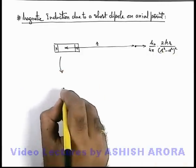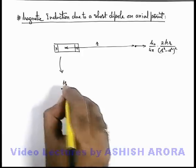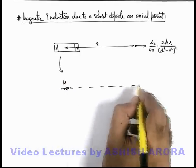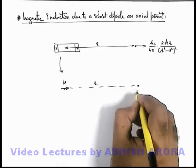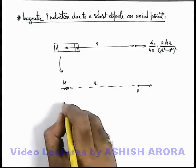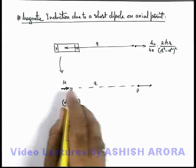Now if the dipole is very short, we can represent it by a small arrow with magnetic moment M. From the dipole at a distance r at point P, the magnetic induction is given by the same relation, but in the denominator we can neglect d, as d will be very very less than r if the dipole is short.